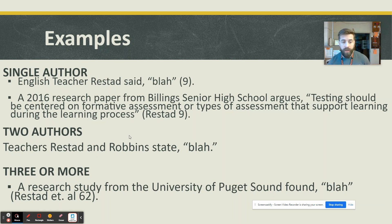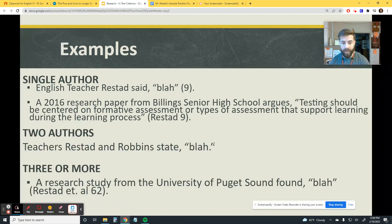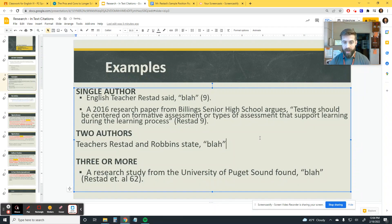If you have two authors, as I showed you on the last slide, you're going to use both of the authors' names. Again, if you have a page number, you're going to use that. And remember, if you're introducing both of your sources by using their names, and if you had a page number, that page number would go at the end like that.